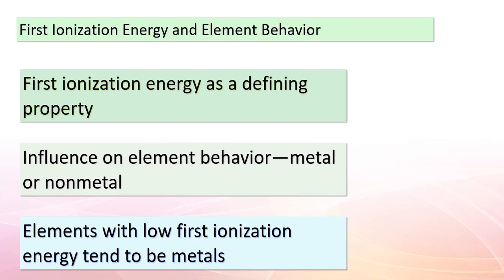Let's focus our attention on a pivotal concept: the first ionization energy. This energy measurement serves as a significant indicator guiding an element's behavior — like a secret code telling us whether an element will exhibit metallic characteristics or venture into non-metals. Elements boasting low first ionization energy are often metals, leaning towards releasing electrons and forming cations. Elements with high first ionization energy tend to behave as non-metals, holding on to their electrons more tightly.